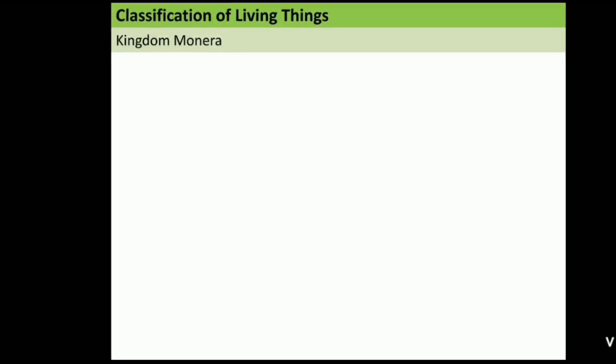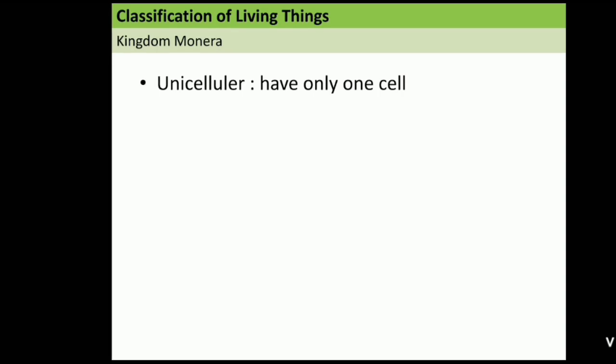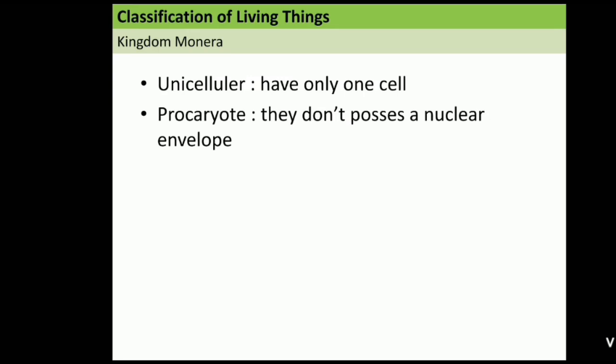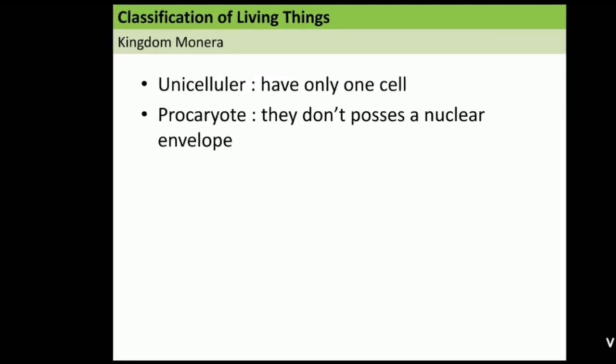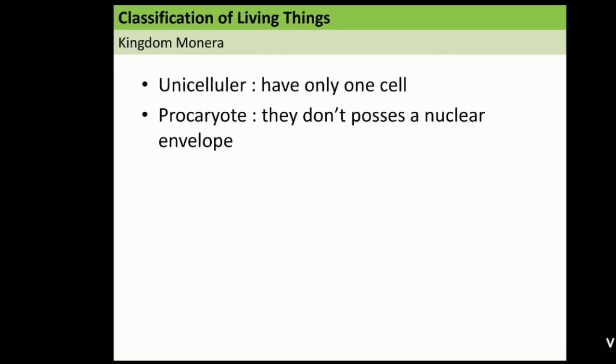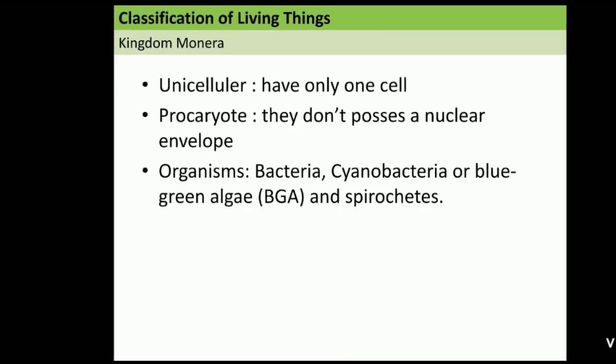Now, let's talk about kingdom Monera. The characteristic of kingdom Monera starts from it is unicellular or have only one cell. And this is prokaryote. It means that they don't possess a nuclear envelope for every organelles.